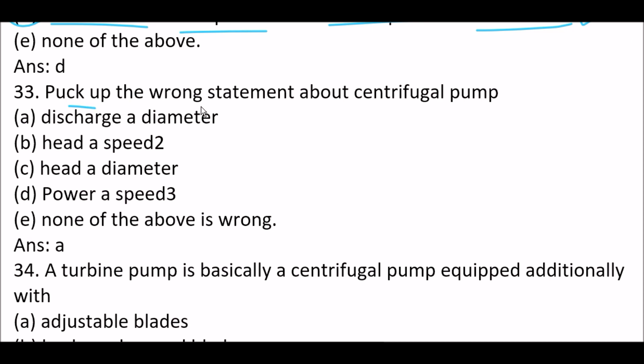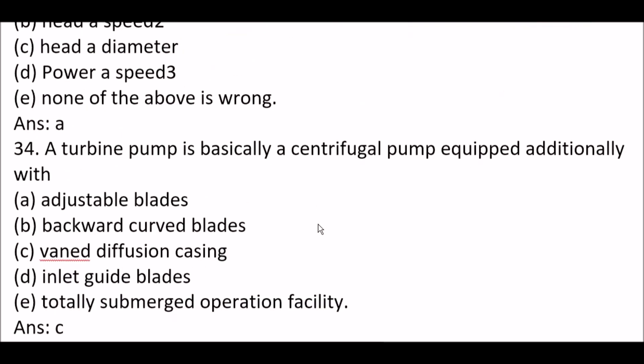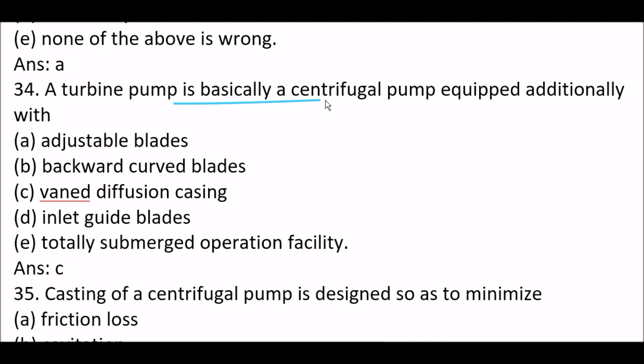Next question. Pick up the wrong statement about centrifugal pump. According to this, you have to pick a wrong statement. So here wrong statement is option A, discharge proportional to diameter. And here right option is also discharge proportional to diameter because you have to choose wrong statement, not the right statement. So option A is right one.